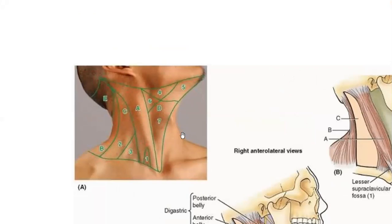This is the anterior median line, and this is the sternocleidomastoid. So the area anterior to the sternocleidomastoid is the anterior cervical region — the anterior triangle of the neck. And the area posterior to the sternocleidomastoid is the lateral cervical region, the posterior triangle of the neck, which has been discussed in detail and the video uploaded for you with the posterior triangles.